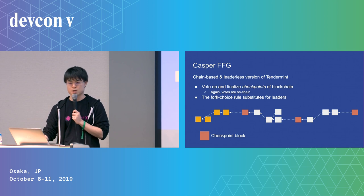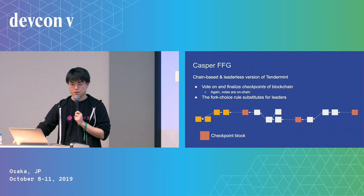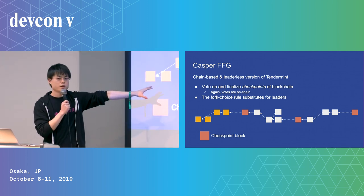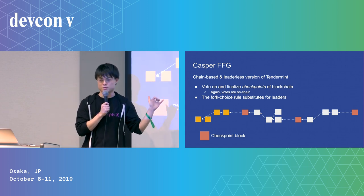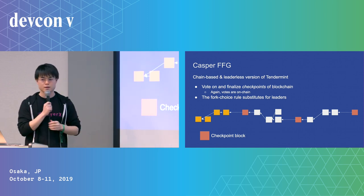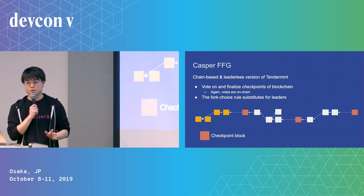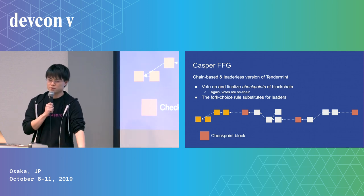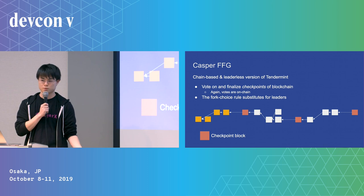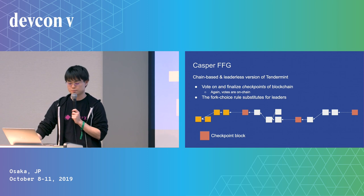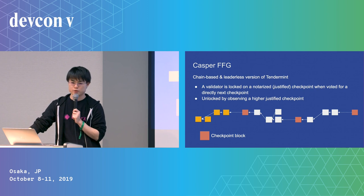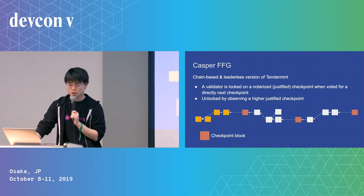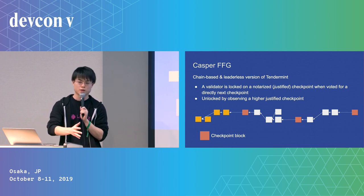Casper FFG is fundamentally similar to Tendermint, but more like a chain-based leaderless Tendermint. In Casper FFG, we don't finalize blocks, we finalize checkpoints—say every 50 slots. Votes are still on-chain. The difference from Tendermint is that the fork choice itself plays the similar role of a leader. In FFG, validators are unlocked when they see a higher notarized or justified checkpoint.